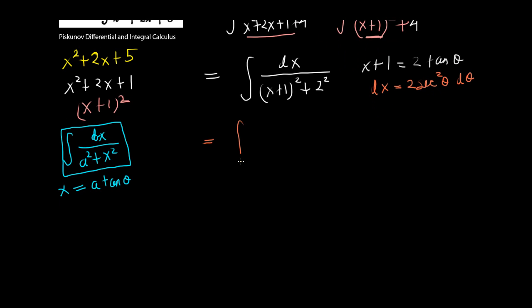So, this integral becomes dx, which is 2 secant squared of theta, d theta, over x plus 1 squared. Now, x plus 1 is 2 tangent of theta. So, x plus 1 squared will be 4 tangent squared of theta. But we have a 4 here. So, if you factor out a 4, you'll get 1 plus tangent squared of theta.